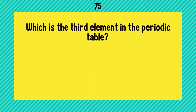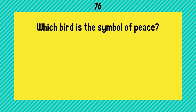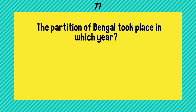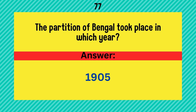Which is the third element in the periodic table? Answer is Lithium. Which bird is the symbol of peace? Answer is Dove. The partition of Bengal took place in which year? Answer is 1905.